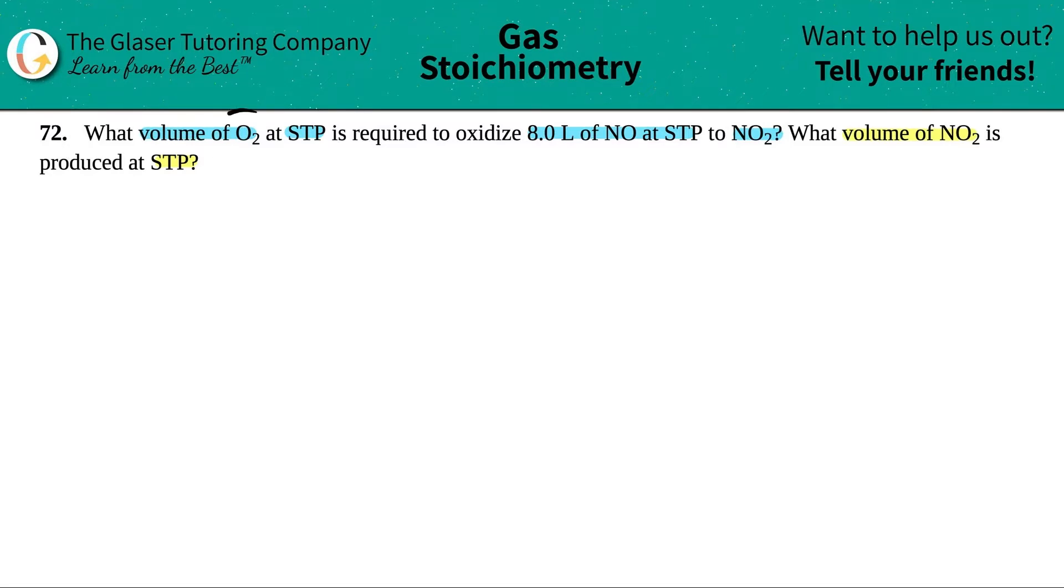So it seems that these two come together to form NO2. So I have O2 plus NO yields NO2. Now remember, just writing the equation, just make sure that it's balanced. To me, it doesn't look like it's balanced. So the first thing I'm going to do is I'm going to balance the equation.